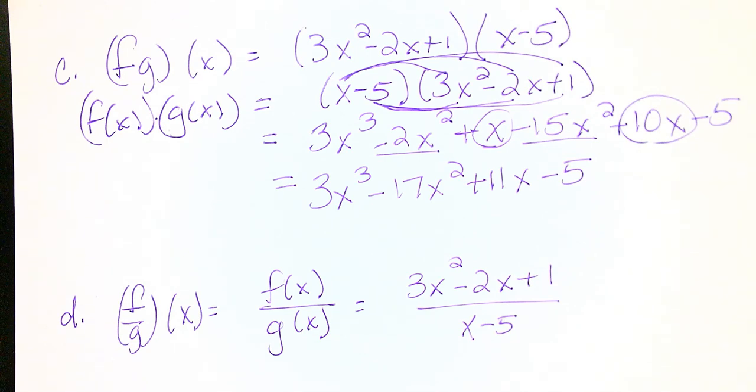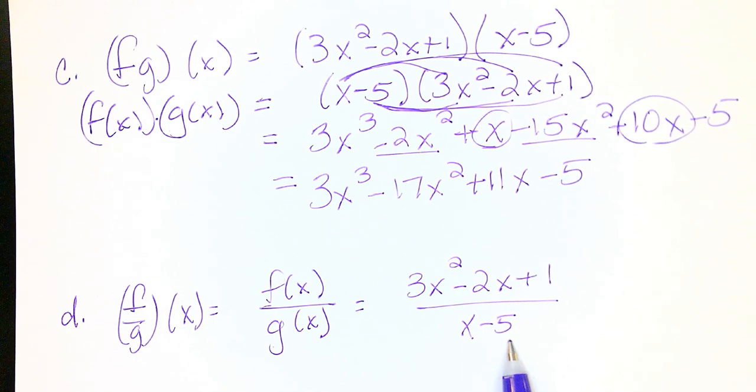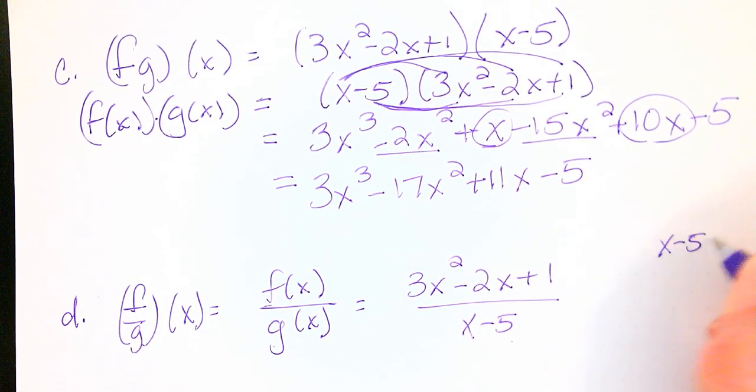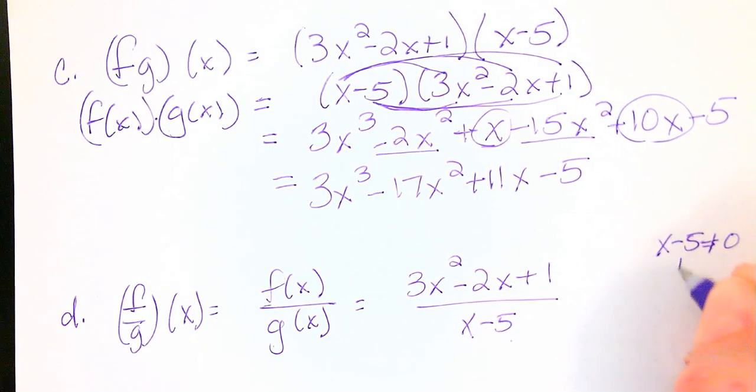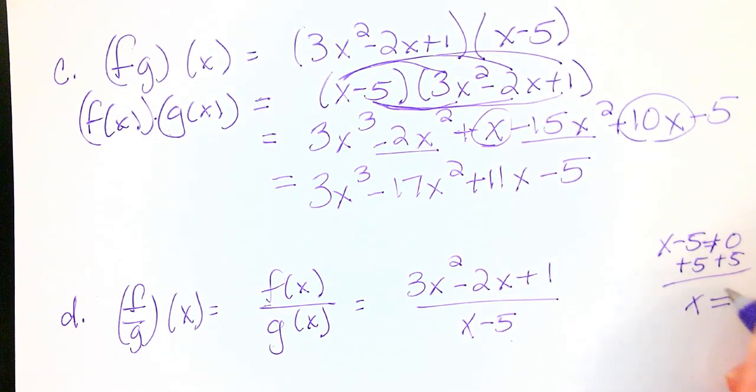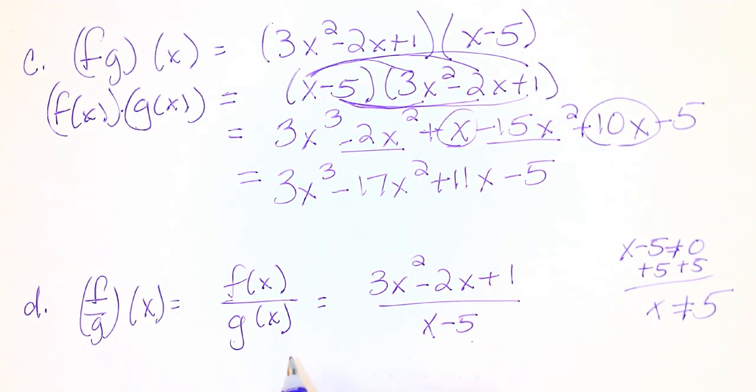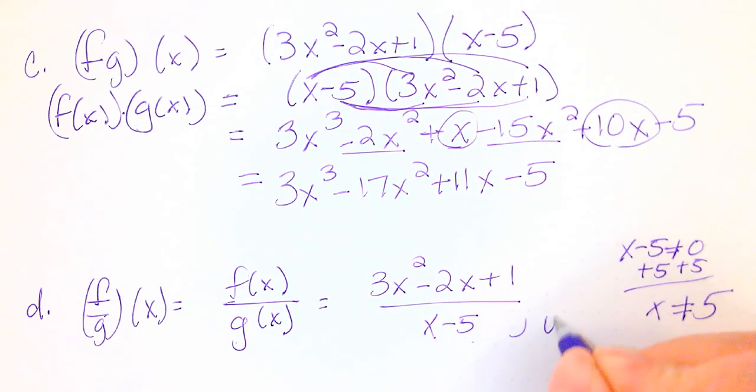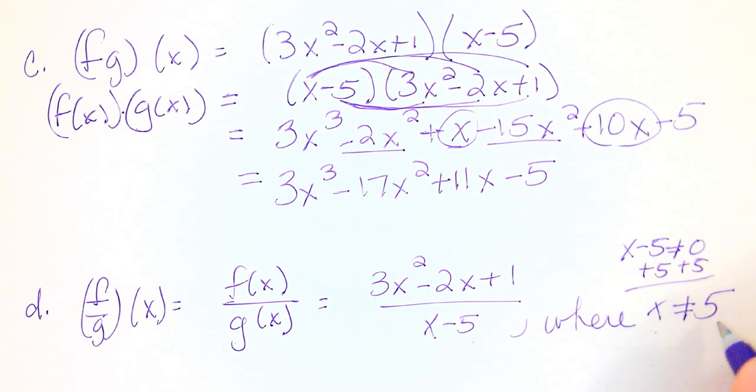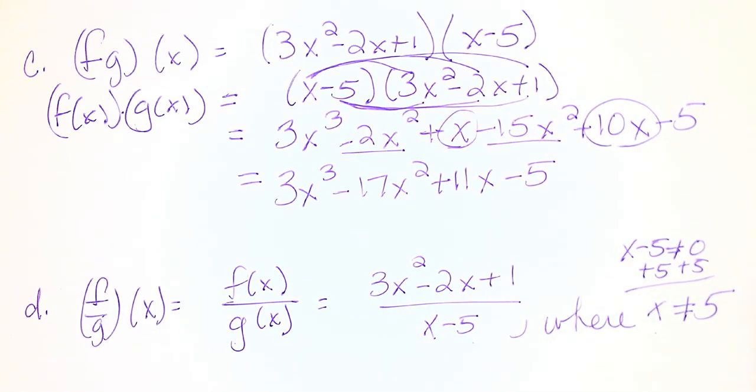And so if we look at g(x), x - 5 here is in the denominator. And if I was to say that x - 5 cannot equal zero, then by adding 5, I could see that x could not be 5. So we're going to say this extra statement that f(x)/g(x) is (3x² - 2x + 1)/(x - 5), where x does not equal 5. And that's because 5 when plugged in would make that denominator zero and that value would be undefined.